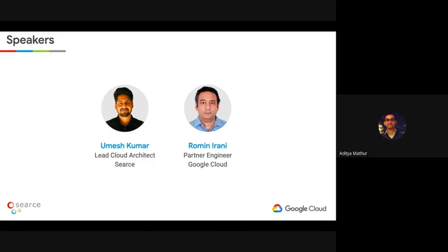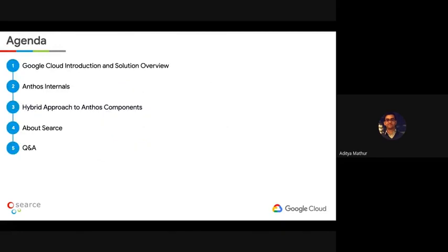We also have Mr. Omesh Kumar, who is a lead cloud architect with Sears. He's been closely working with clients and implementing some of these workloads. Both of these should be very insightful sessions. I'd also like to briefly present the agenda: Roman will walk us through Google Cloud's history, how Kubernetes has progressed, an overview of the products, a deep dive with Anthos, and then the hybrid approach to Anthos.